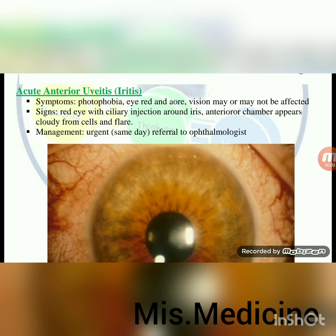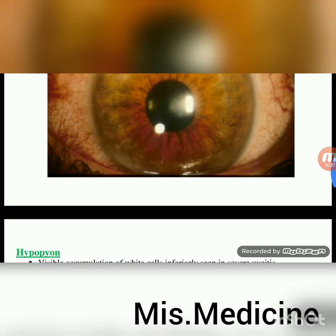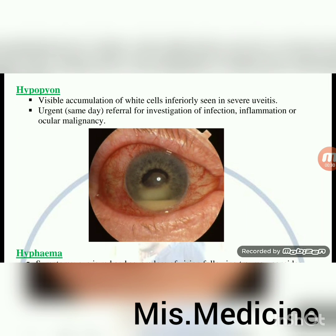Acute anterior uveitis or iritis — symptoms: photophobia, eye red and sore, vision may or may not be affected. Signs: red eye with ciliary injection around iris; anterior chamber appears cloudy from cells and flare. Management: urgent same-day referral. Hypopyon — visible accumulation of white cells inferiorly — seen in severe uveitis; urgent same-day referral for investigation of infection, inflammation or ocular malignancy.